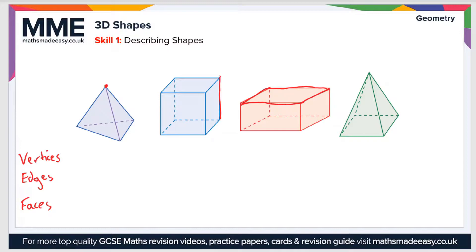The first shape is known as a tetrahedron. A tetrahedron is a specific type of pyramid where all the faces are equilateral triangles. The number of vertices is 4, the number of edges is 6, and the number of faces is 4. Next we have a cube.